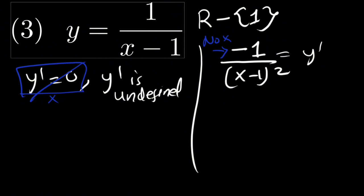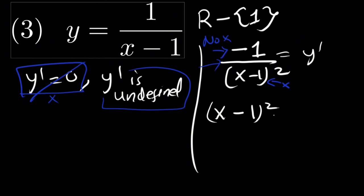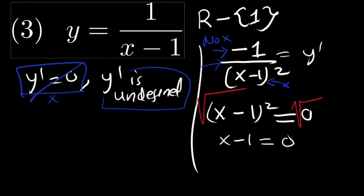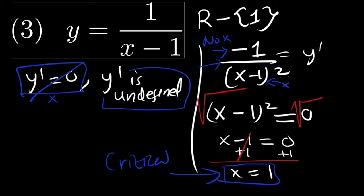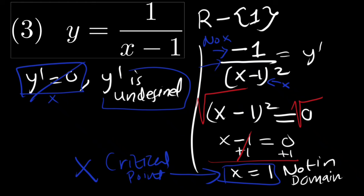We find critical points by making this function undefined, since we have an x in the denominator. To make it undefined, we take the denominator and set it equal to zero. Taking the square root of both sides gives x minus 1 equals zero. Adding 1 to both sides gives x equals 1. However, x equals 1 is not in the domain, so it cannot be a critical point. Therefore, we have no critical points.